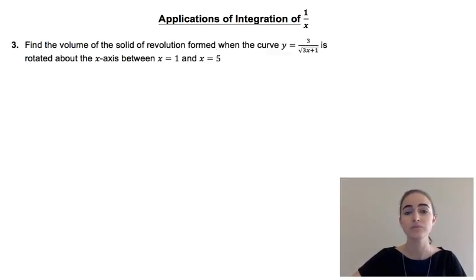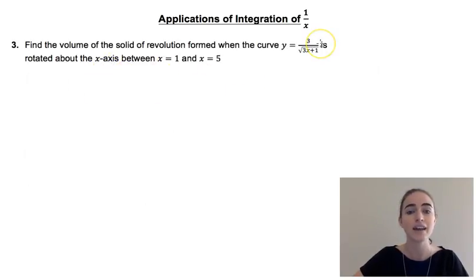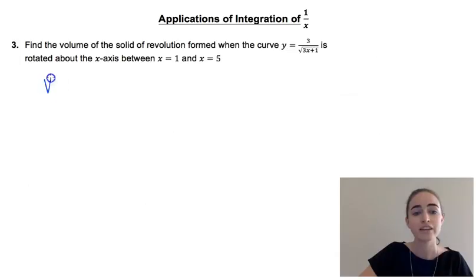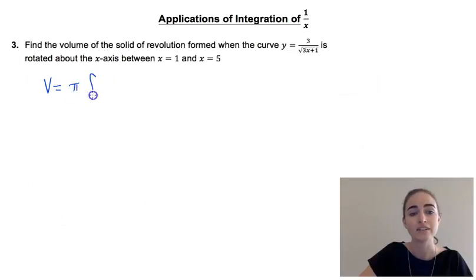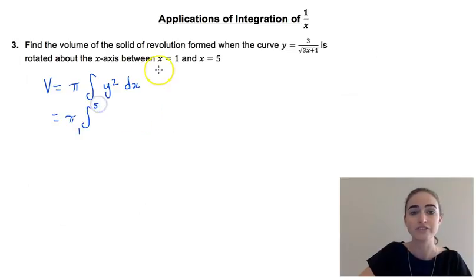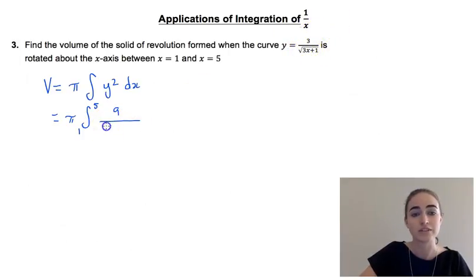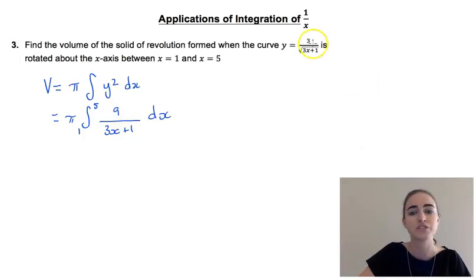Our last problem asks us to calculate the volume of the solid of revolution formed when the curve y equals 3 over the square root of 3x plus 1 is rotated about the x-axis between x equals 1 and x equals 5. When finding the volume of a solid of revolution rotated about the x-axis our formula is pi times the integral of y squared dx.